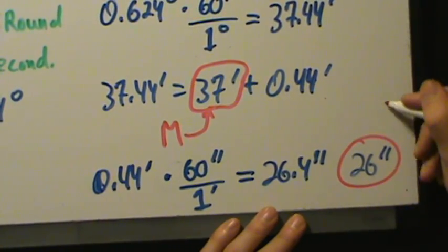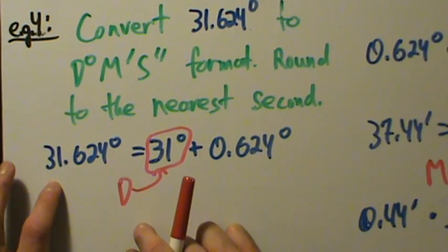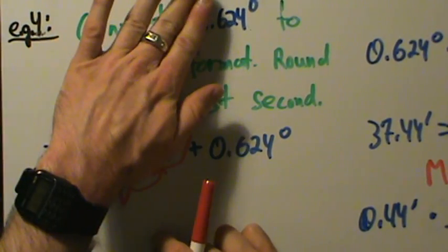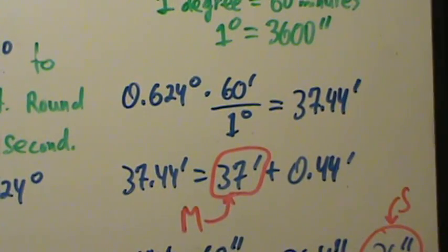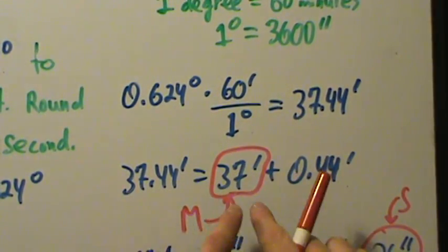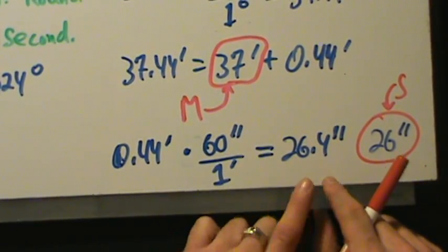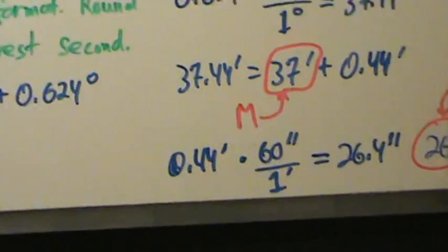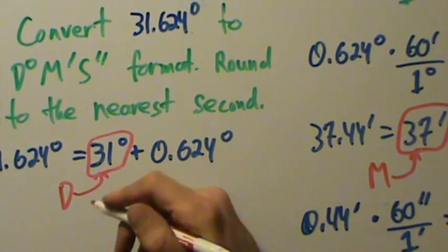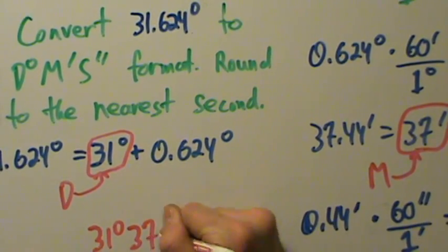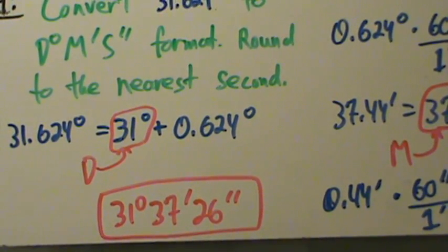So our S is 26 seconds. To recap the process: take the whole number part of the degrees — that's your D. Take the fractional part, convert to minutes by multiplying by 60. Take the whole number part of that result — that's your M. Take the fractional part of the minutes, convert to seconds by multiplying by 60 again, then round. So the final answer for example four is 31 degrees, 37 minutes, and 26 seconds.